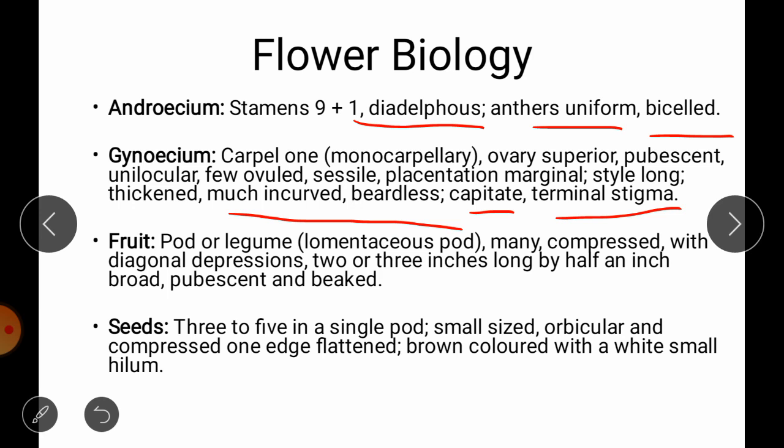The fruit is called a pod or legume. Many fruits are present on each plant, compressed with diagonal depression, 2 to 3 inches long, pubescent and beaked — the pod has a beak at the end. Seeds are 3 to 5 in a single pod, small sized, orbicular and compressed, one side flattened, brown coloured with a small white hilum.